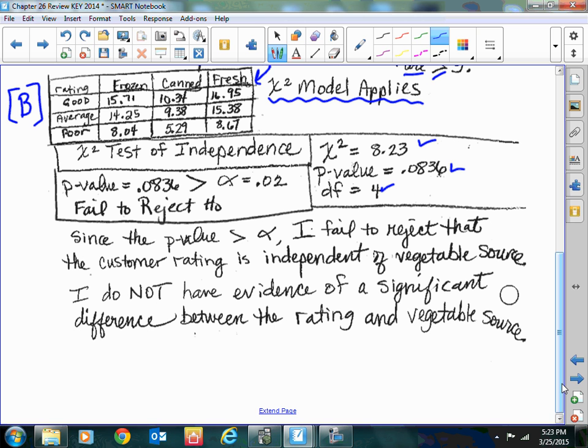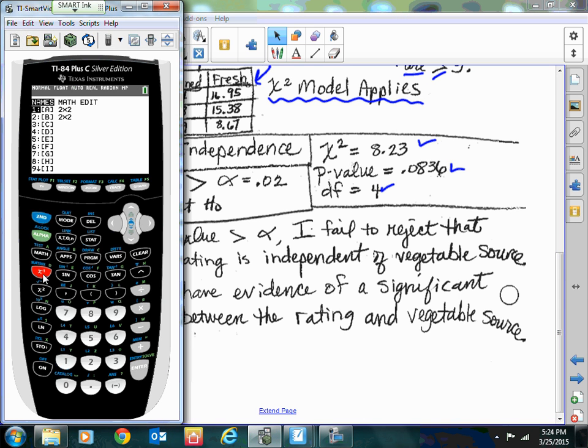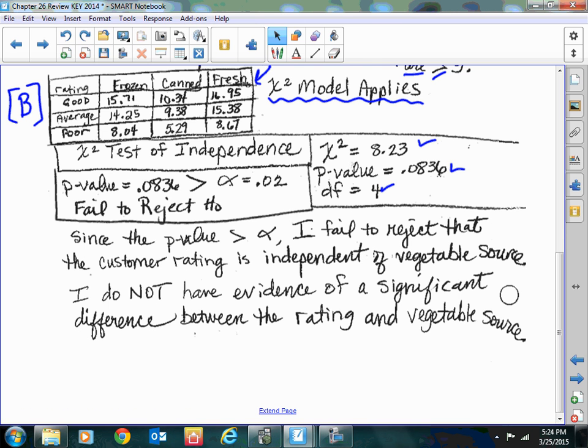And so then my p-value is greater than that alpha they defined as 0.02, so I failed to reject. Since the p-value is greater than alpha, I do not reject the independence. So I do not have evidence of a significant difference between the rating and the vegetable source. By the way, in the calculator, when you go second x to the negative one and you go over to edit, place your items into matrix A. Then you go run the test, stat, over to tests, up to the chi-squared test. After you do that, it will put your information into matrix B. The best way to view this is go second x to the negative one, over to edit. It is easiest to view your matrix B and then down to matrix B, hit enter. There pops up - this is a different matrix I had in there. That's the best way to view your expected matrix.